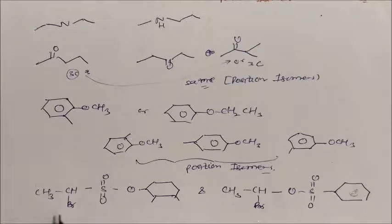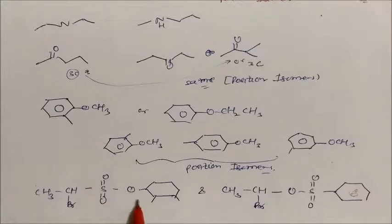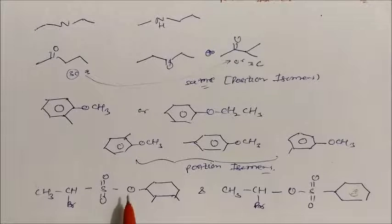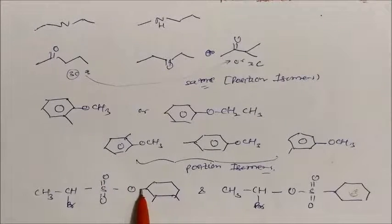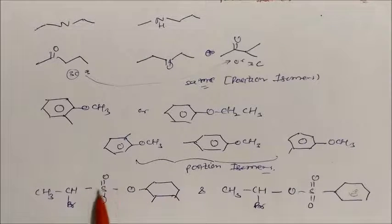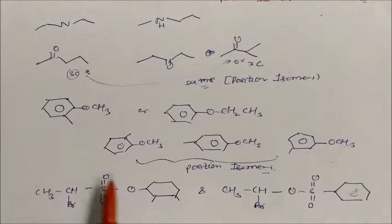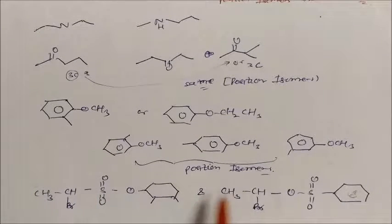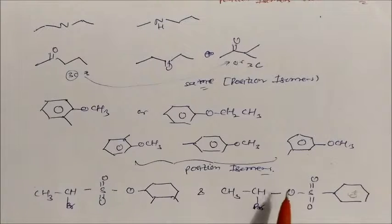Further examples of metamers show that around the oxygen atom, when a group moves from one side to the other — changing the carbon count on each side — this constitutes metamerism. So whenever the alkyl groups on either side of the polyvalent functional group atom are different, these compounds are metamers.